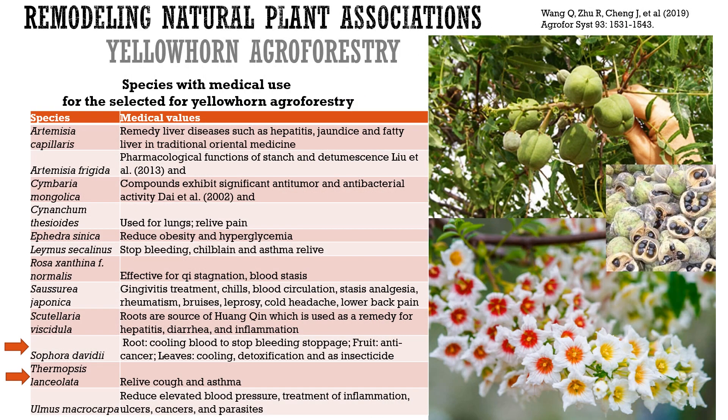Remodeling natural plant associations — learning from nature and back to nature — is an agroforestry design approach implemented to develop a viable agroforestry scenario for Yellowhorn, a Chinese endemic oil woody plant. Eighteen species combinations were designed based on plant-positive associations with Yellowhorn in natural communities and anticipated economic benefit. These include medicinal plants, two of which provide the additional benefit of nitrogen fixation.